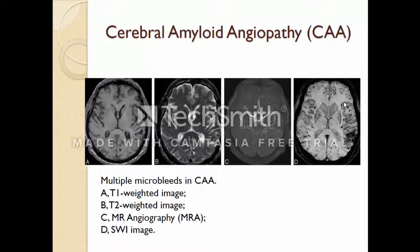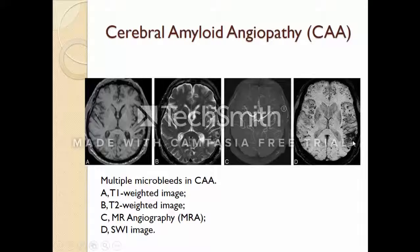Cerebral amyloid angiopathy tends to manifest in elderly patients and is a major contributor to progressive cognitive decline. It can play a role in the pathogenesis of dementia and also in Alzheimer's disease. In this figure we expect to see multiple microbleeds in CAA, but the T1 weighted image and T2 weighted image do not reveal significant abnormality. MR angiography also shows normal vascular structure. But here in SWI we can see hemorrhage in the left area.